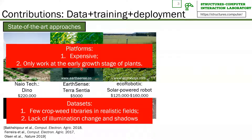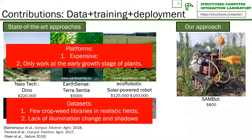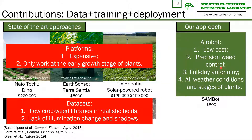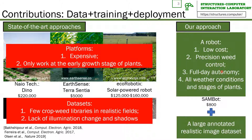By contrast, our robot, Sandbot, costs about $800 and can work all day long for precision weed control in real fields. From the cameras on our Sandbot, we collect a large realistic image dataset with annotated labels. This dataset is called AI-Weed, which is our first contribution.